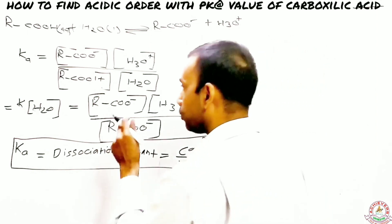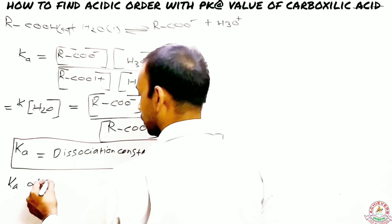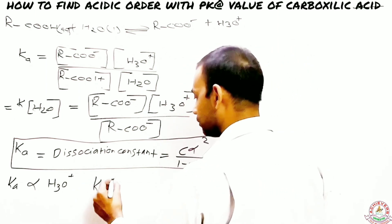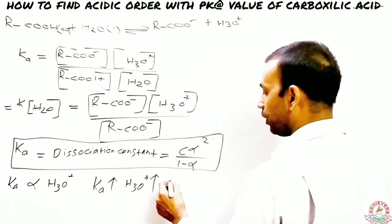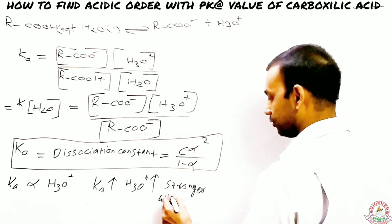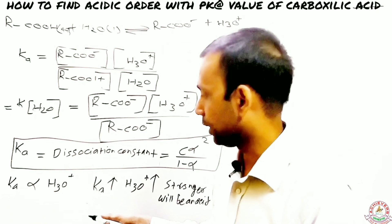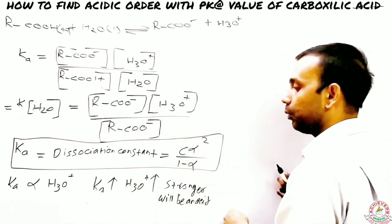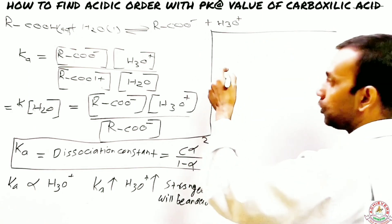An important relationship: Ka is directly proportional to the concentration of hydronium ion. This means Ka will increase if you increase the hydronium ion concentration in a solution, which makes the acid stronger. So a higher Ka means a stronger acid.